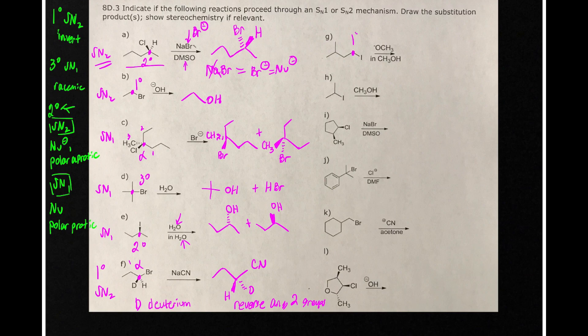In G, we have a primary alkyl halide. So that's going to be SN2. There's no stereochemistry. Here's the nucleophile. So we just snap it in there.